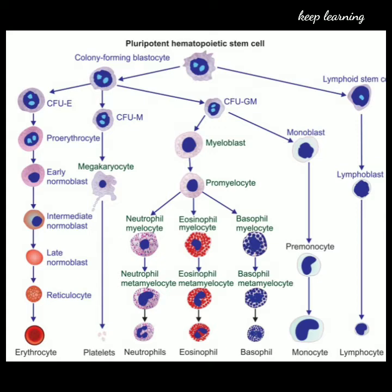The next stage is the intermediate normoblast, where the size further decreases and hemoglobin starts to appear. Then the late normoblast, which is smaller than the intermediate normoblast, has hemoglobin. Next it gives the reticulocyte, and finally the erythrocyte — the matured RBC with 6.5 to 7.5 microns diameter, containing hemoglobin and no nucleus. It takes at least 7 days from proerythroblast to form a mature RBC.